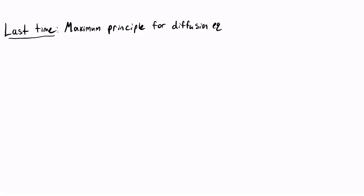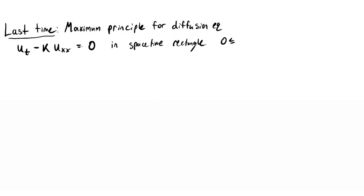So remember, what is the maximum principle for the diffusion equation? Well, let's suppose you have a function which solves the diffusion equation. That means ut minus some constant k times uxx is equal to zero. Suppose that this is in a spacetime rectangle, where x is between zero and some number L, and t is between zero and some capital T.